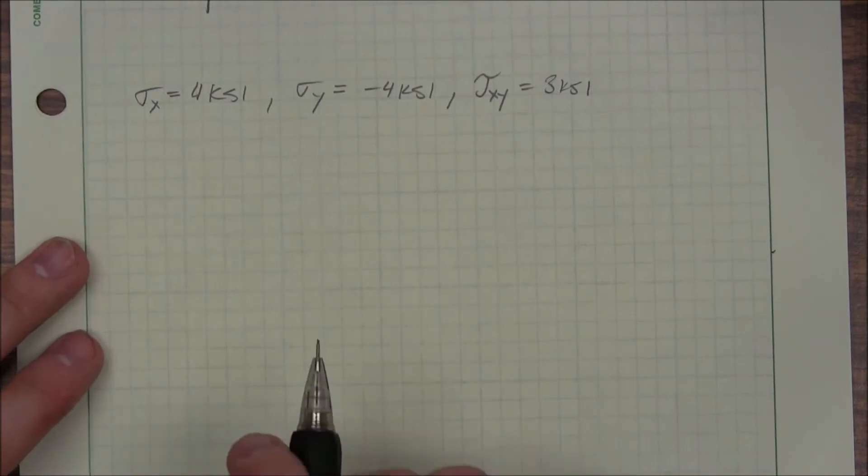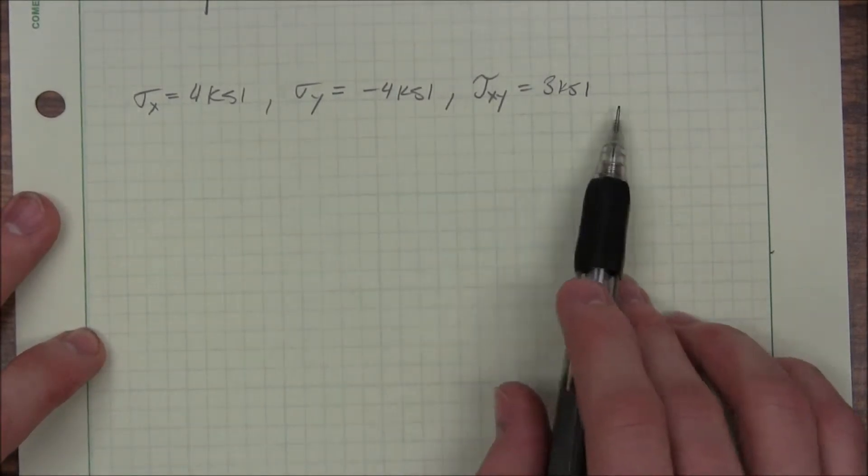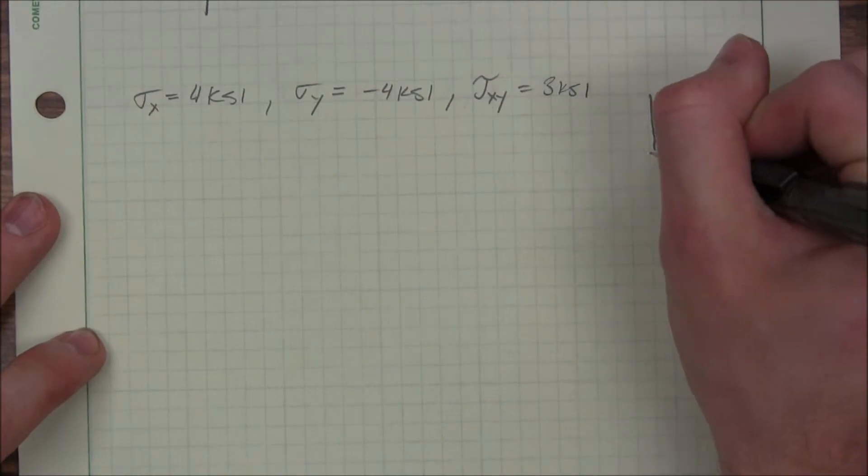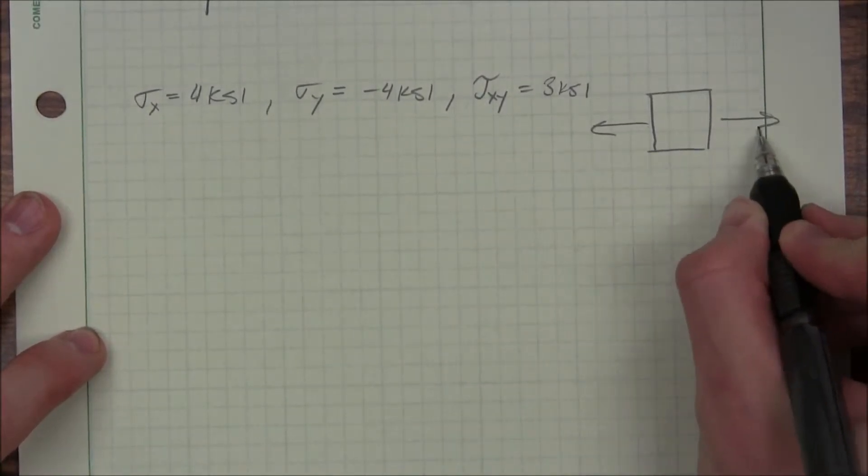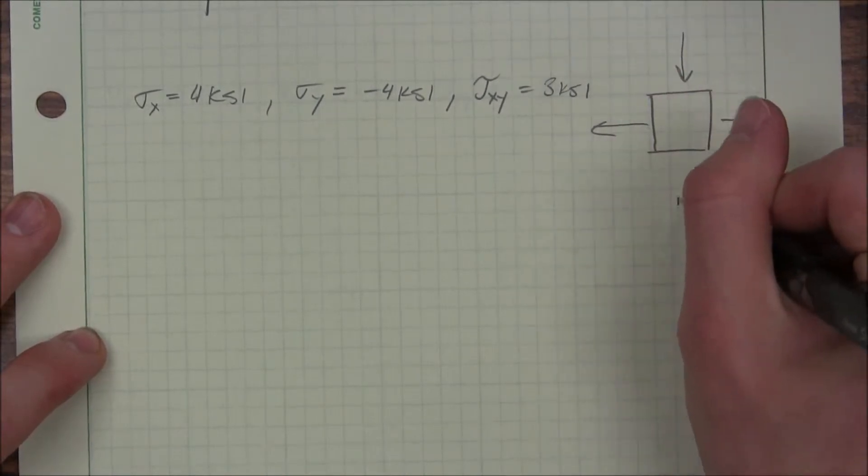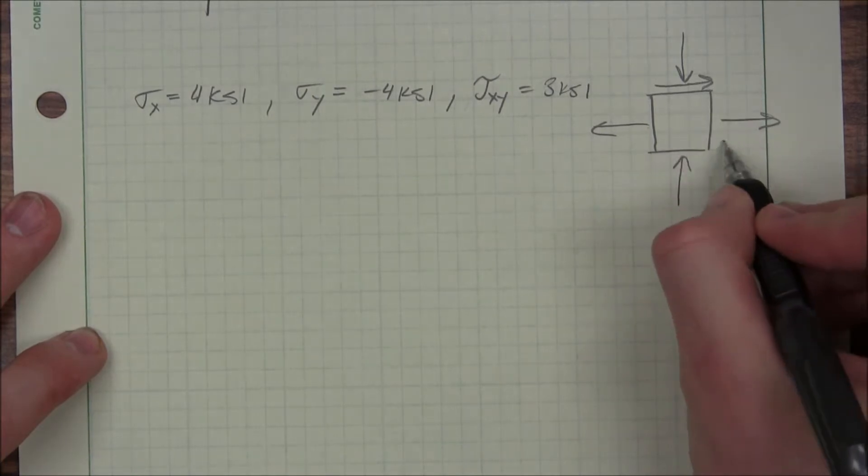Let's look at a different one. So we've got 4 KSI, negative 4 KSI, and 3 KSI. Our element would look like this. It's positive outward, negative inward, and we've got positive shear stress. So it's pointing towards that corner.